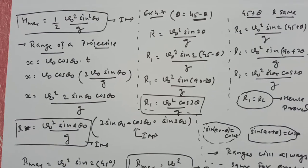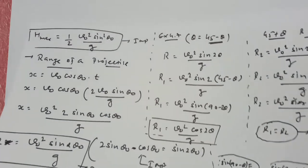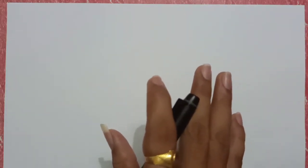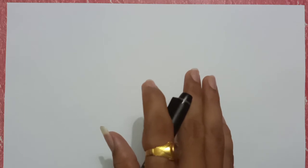So let's start with the new example. देखो यह वाला numerical थोड़ा complicated है, क्योंकि हमने जो बड़ी theory देखी थी ना, उसका concept use करके ही हमें यह solve करना है, और obviously उसमें concepts बहुत सारे हैं।